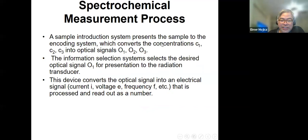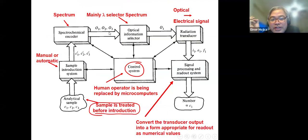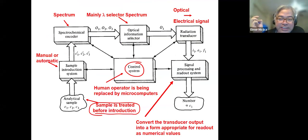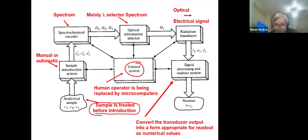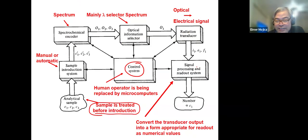The information selection system selects the desired optical signal — not all of them, only one is selected. The optical signal can be converted into an electrical signal using a radiation transducer. The radiation transducer is a device that converts your optical signal into an electrical signal — it could be current I1, voltage E1, or frequency F1.